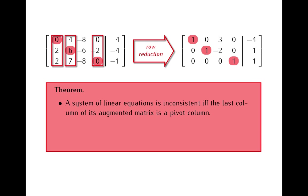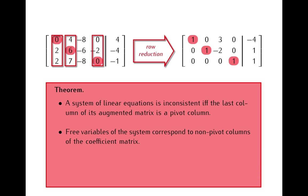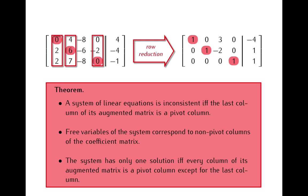Secondly, free variables of a system of equations correspond to columns of the coefficient matrix that after a row reduction contain no leading ones. So we can restate it by saying that free variables of a system correspond to non-pivot columns of the coefficient matrix. Lastly, since a system of equations has exactly one solution if and only if it is consistent and has no free variables, a system has exactly one solution if and only if every column of the augmented matrix is a pivot column except for the last column.